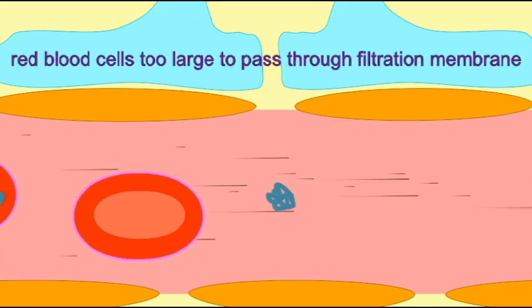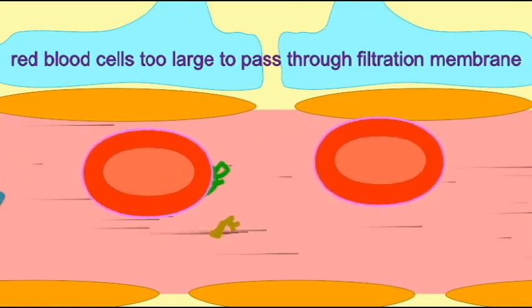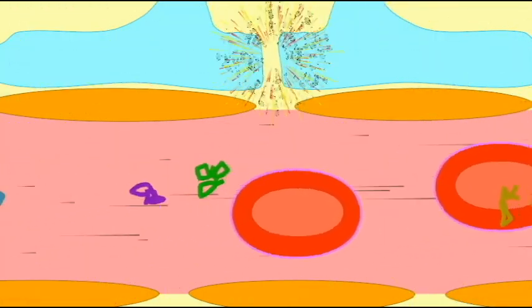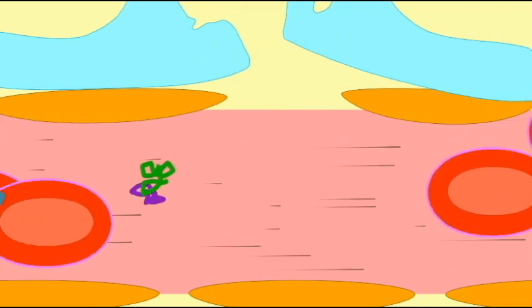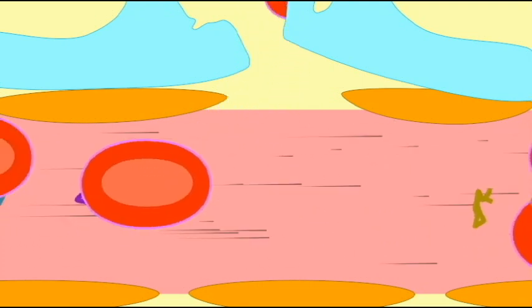Red blood cells are too large to pass through the filtration membrane and thus should not be present in urine. Trauma to the area of the kidneys, kidney disease, or the presence of tumors may cause red blood cells to be present in urine.